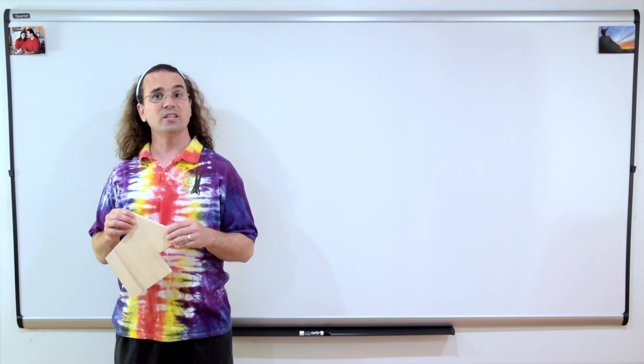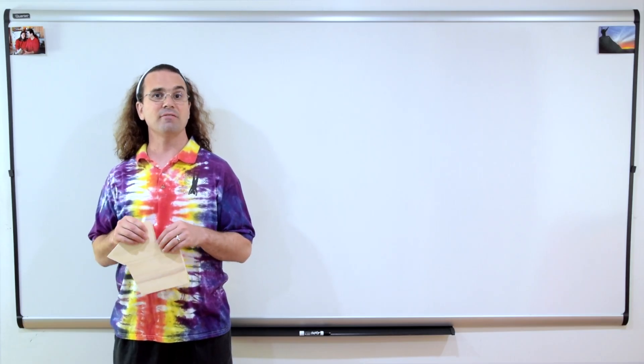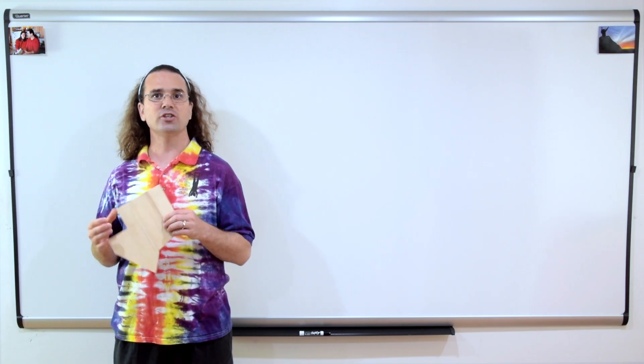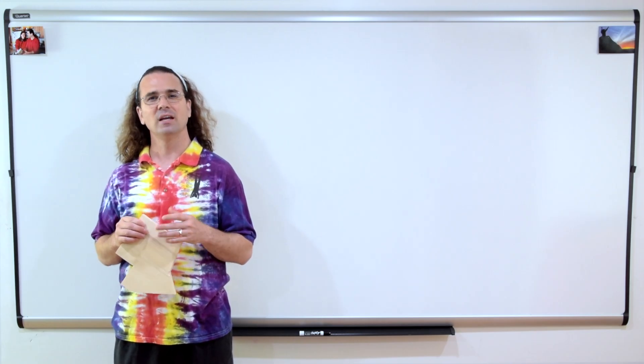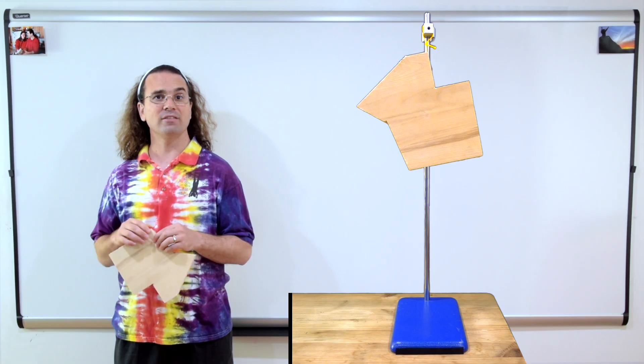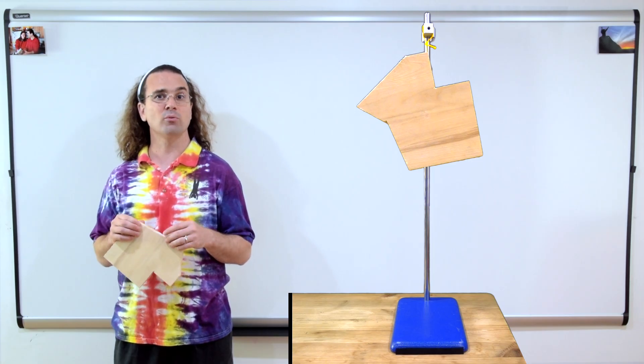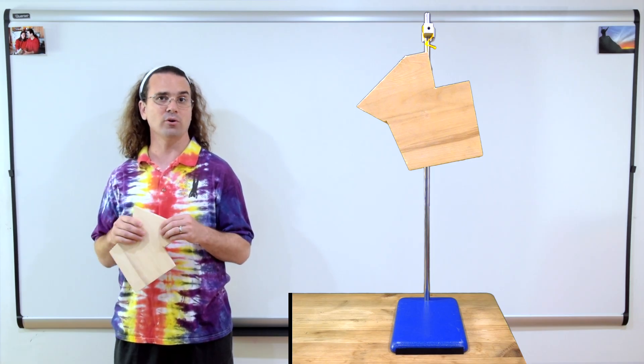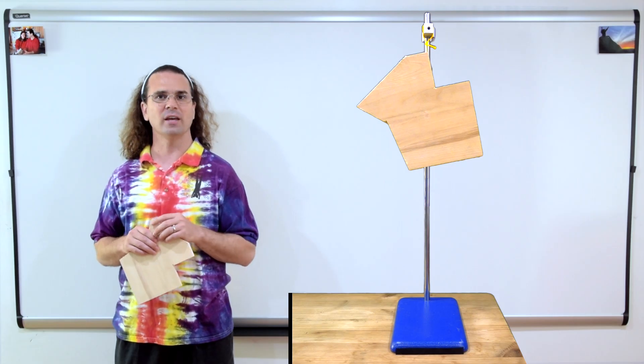This brings us to a simple way to find the center of mass of a flat object. For example, this irregularly shaped flat piece of wood. When we hang the wood, the force of gravity pulls on the center of mass of the wood to bring the center of mass to its lowest point, just like it did on the toy egg.